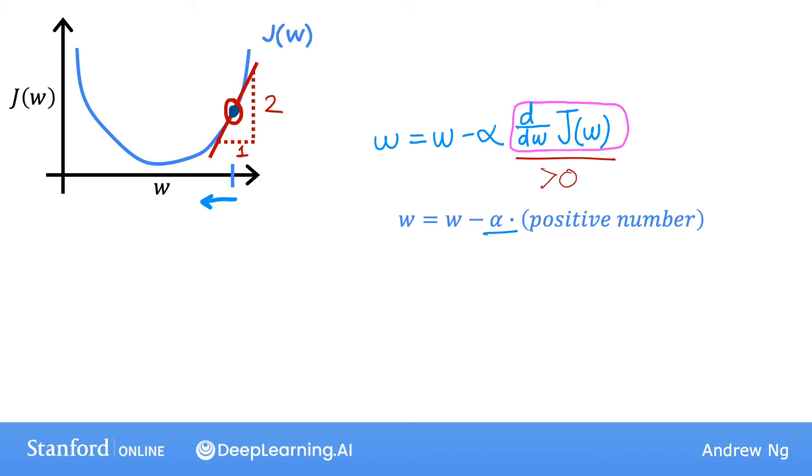You may notice this is the right thing to do if your goal is to decrease the cost J, because when we move toward the left on this curve, the cost J decreases and you're getting closer to the minimum for J. So far, gradient descent seems to be doing the right thing.